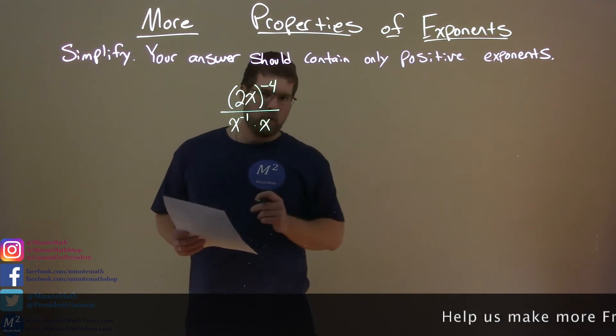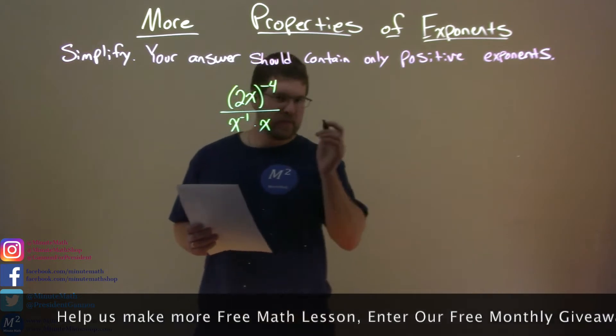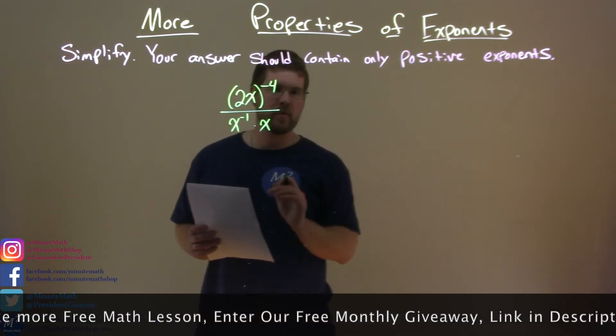2x all to the negative fourth power over x to the negative one times x. Let's deal with the numerator and denominator separately at first.